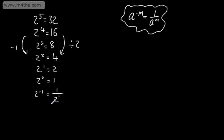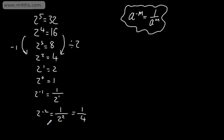We can extend this further. 2 to the power of negative 2 is going to be 1 over 2 squared. All I'm doing is dividing by 2. If you divide 1 half by 2, you're going to get 1 over 4, or 1 over 2 squared, which is 1 over 4. 2 to the negative 3 is going to give us 1 over 2 to the power of positive 3, which is going to be 1 over 8. So again, it holds with this rule: a to the negative m is equal to 1 over a to the positive m.